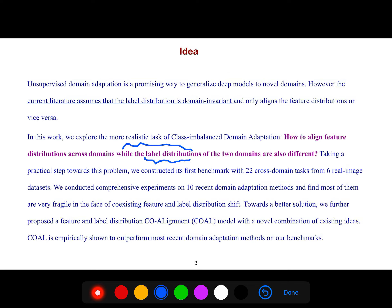Towards a better solution, we further proposed a feature and label distribution co-alignment model with a novel combination of existing ideas. COAL is empirically shown to outperform most recent domain adaptation methods on our benchmark.